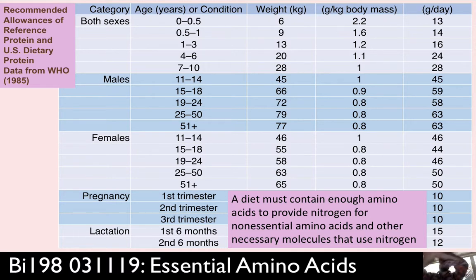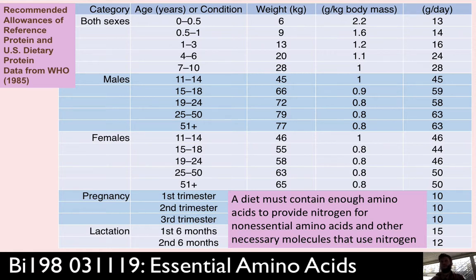That said, there are examples where protein powder or protein supplements are warranted. If you're in positive nitrogen balance — like an athlete building muscle — you need to be aware of your protein requirements. Or if you have a wasting disease where you're shedding nitrogen, you may need nitrogen supplements. Even as a vegetarian eating a serving of protein a day, you're probably getting plenty. It's just a lot of money for something most people don't really need.